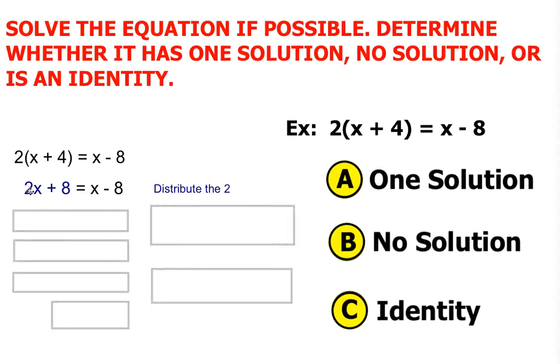2 times x is 2x. 2 times positive 4 is now positive 8. The right side of the equation stays the same, x minus 8.